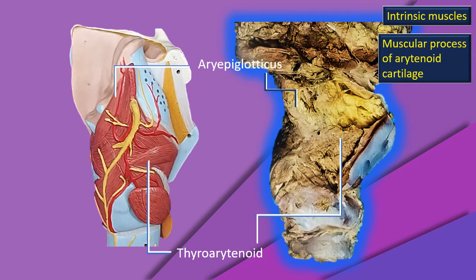Next, the aryepiglotticus is reflected in the specimen here — watch carefully. Once again, I retain the flashing star representing the muscular process of the arytenoid cartilage. The next muscle is obviously the thyroepiglotticus, running from the angle of the thyroid into the epiglottis.